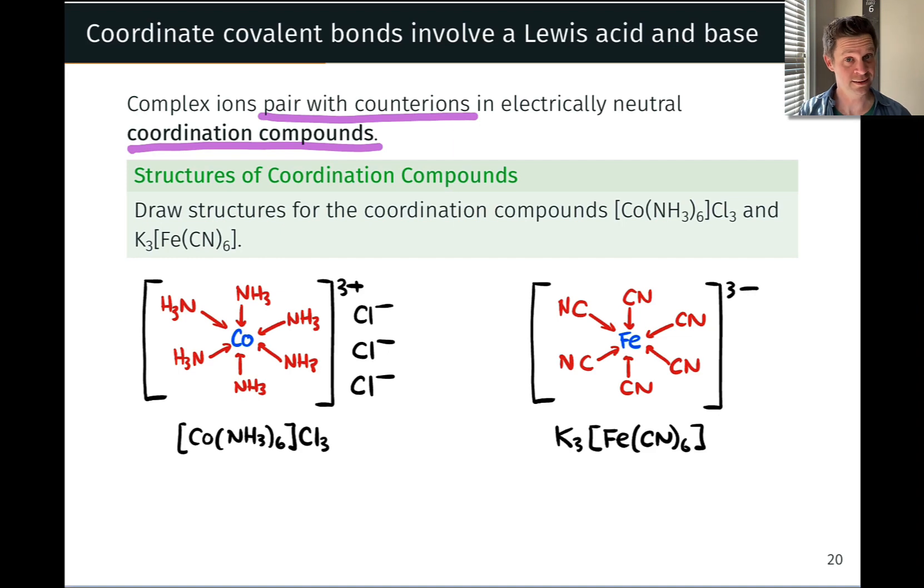In the iron-cyano complex with the 6 cyanide ligands, the overall charge is -3 on the complex ion. In this anionic complex ion, its charge is counterbalanced by 3 potassium cations, K+. The K+ are not ligands. They are not coordinated to the iron center.